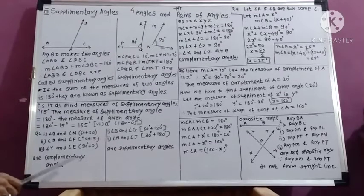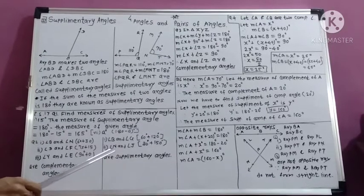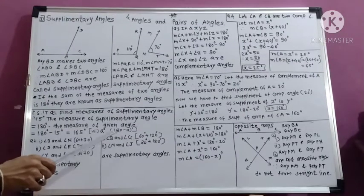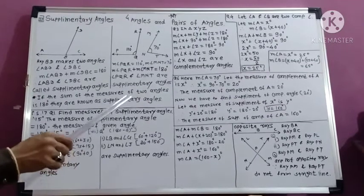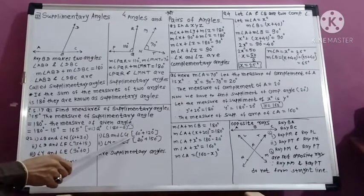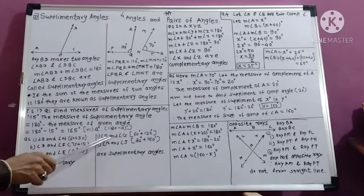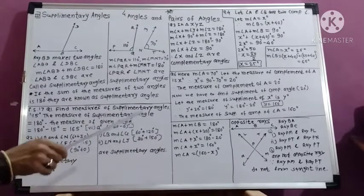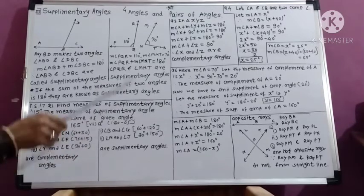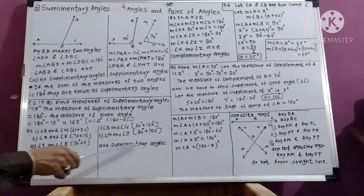Now identifying supplementary angle pairs: when the sum of measures of two angles is 180 degrees, they are supplementary. Angle B and angle G have measures 60 degrees plus 120 degrees — their sum is 180 degrees, so angle B and angle G are supplementary angles. Also, angle N and angle J — their sum is 180 degrees, so they are also supplementary angles.